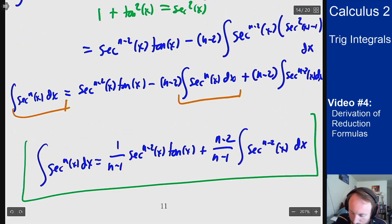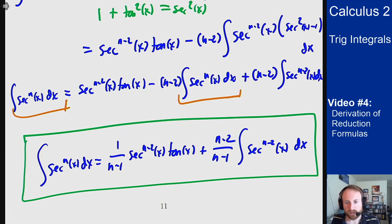And there's your reduction formula for secant. There's other ones you can get for cosine and for tangent, but these are the ones that you really want to have in mind when you're trying to solve these trig integral problems.